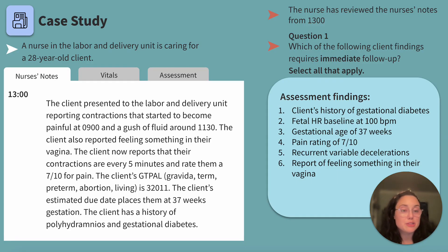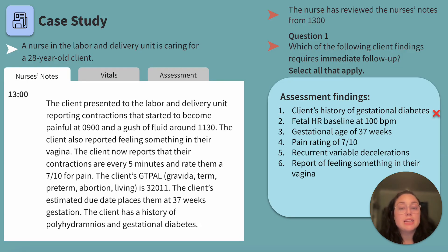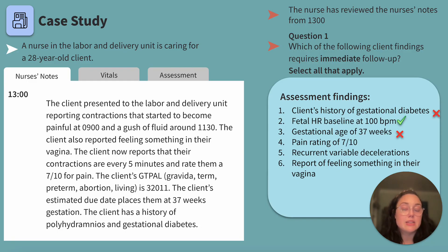Let's go through each option step by step. Gestational diabetes is important information, but not worrisome if the client isn't experiencing symptoms of hyper- or hypoglycemia. Fetal heart rate baseline at 100 beats per minute — fetal bradycardia — we want to address that immediately. Gestational age of 37 weeks is not concerning as this is considered full-term. Pain rating of 7 out of 10, while fairly high, is not totally abnormal for labor.